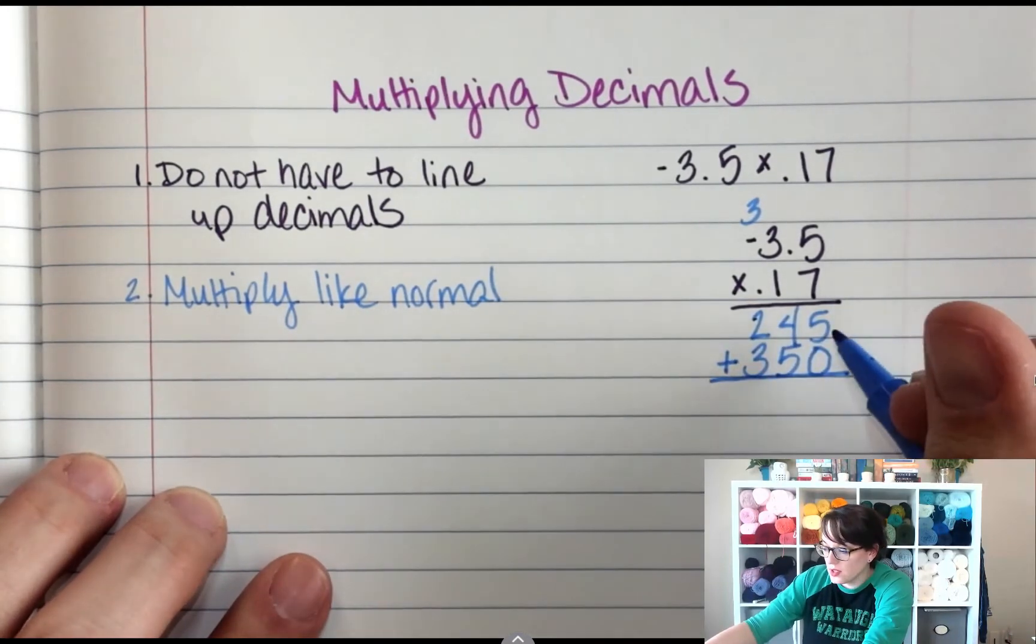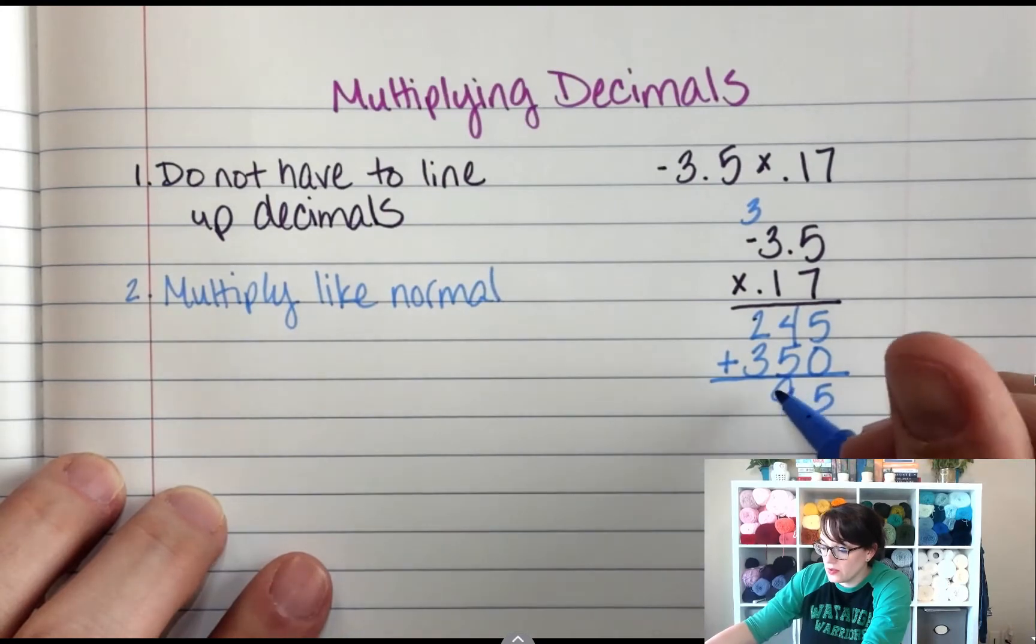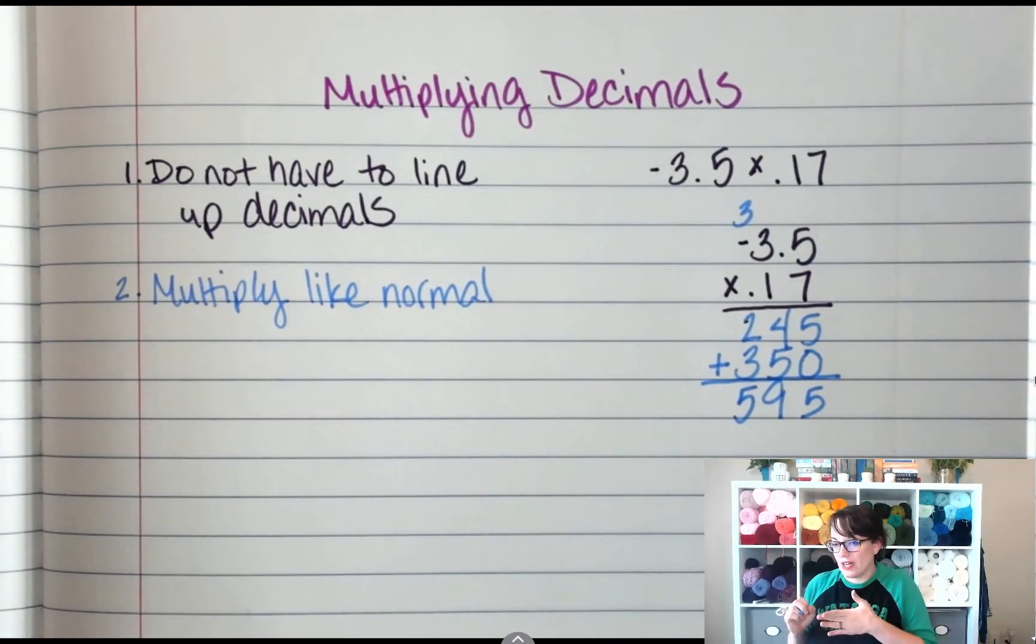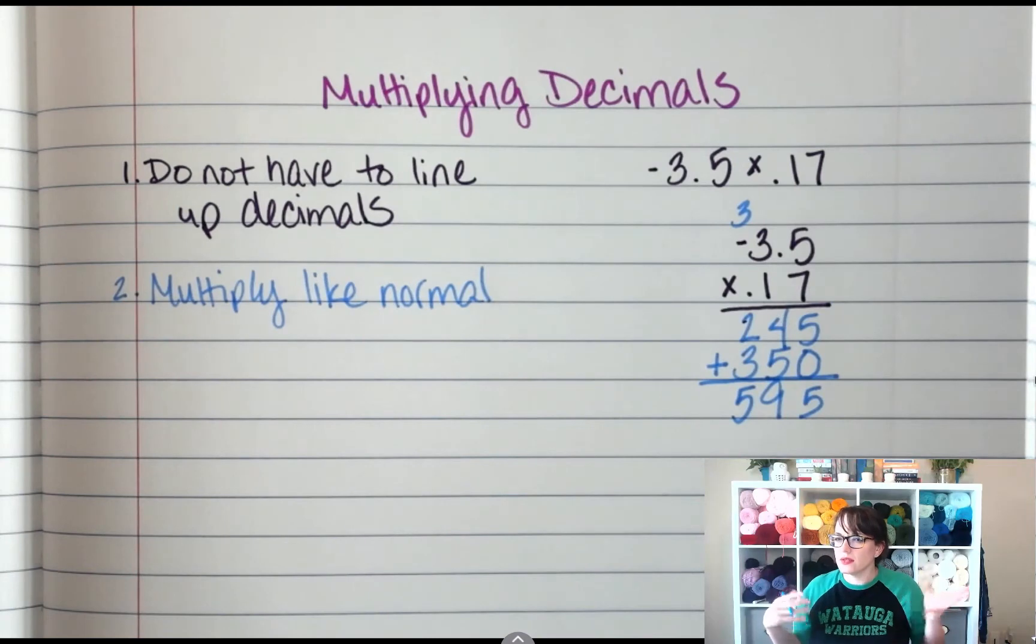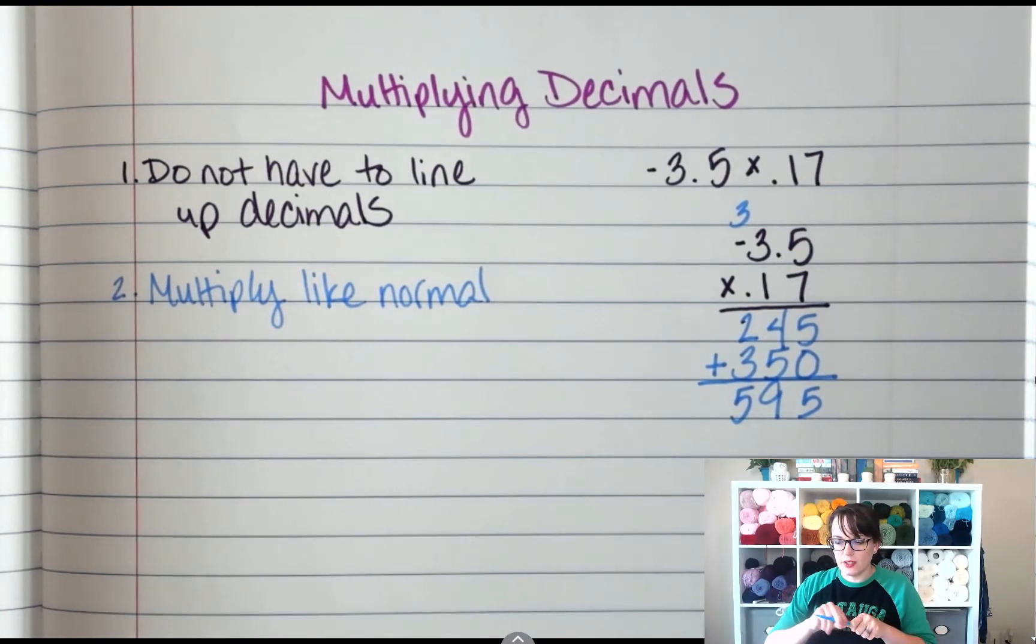Then I add them together. So 5 plus 0, 4 plus 5, 3 plus 2, and I end up with 5, 9, 5. Now this is where we have to stop. Logically, 3 times 1 is 3. So if 3 times something really tiny, it cannot be 595.